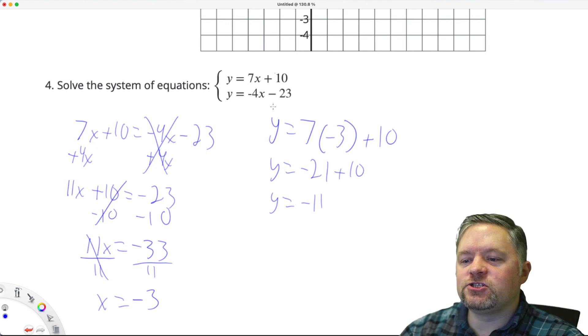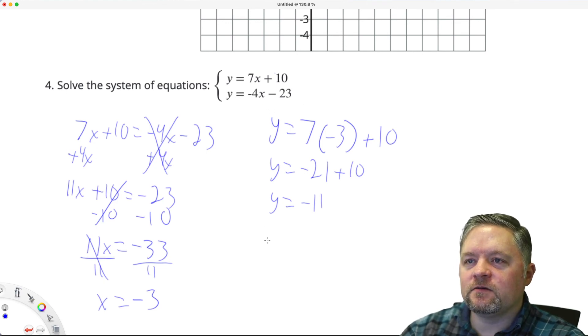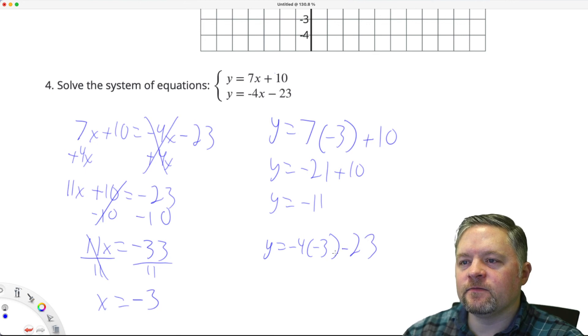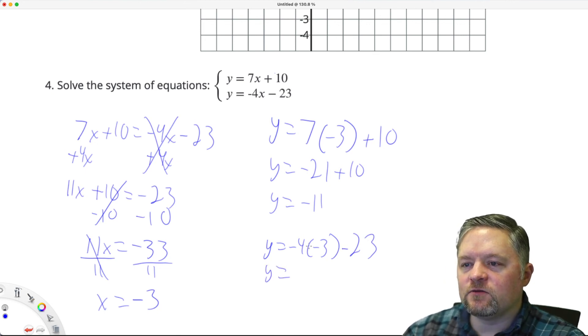Now, let's check it with the other one. Y equals negative 4 times X, which is negative 3. Subtract 23. Y equals negative 4 times negative 3 is positive 12. Minus 23. 12 subtract 23 is negative 11. They match.